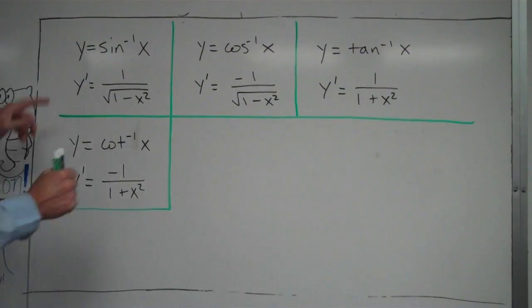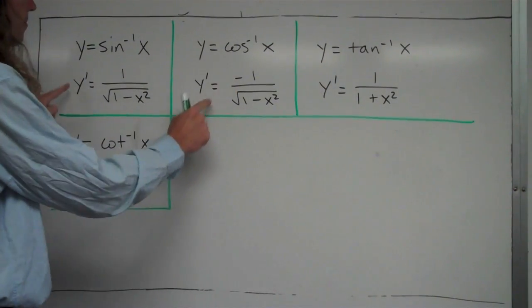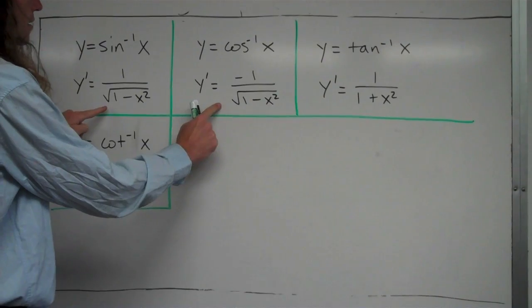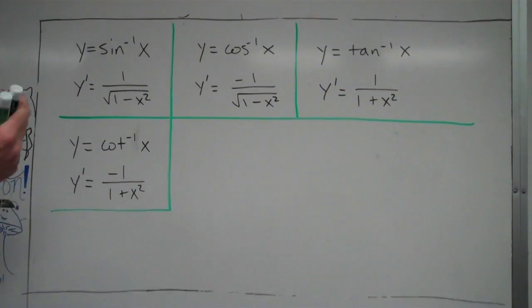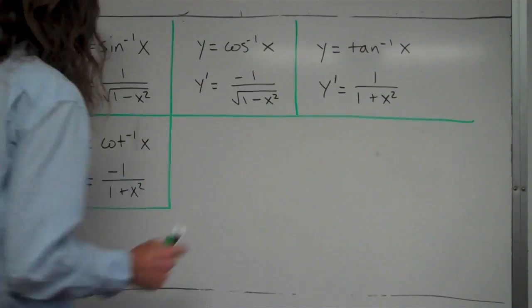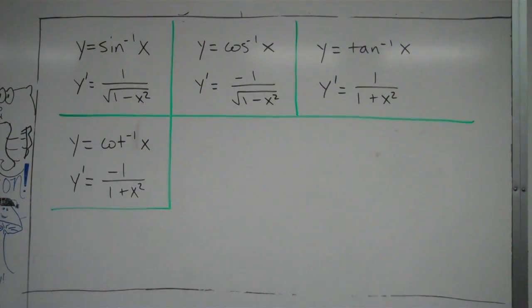Now one thing you'll notice is with inverse sine and inverse cosine, they're exactly the same thing except for negative. So really, if you have one of them memorized, you pretty much have both. And the same thing with inverse tangent and inverse cotangent, they're exactly the same thing except for the negative right there.